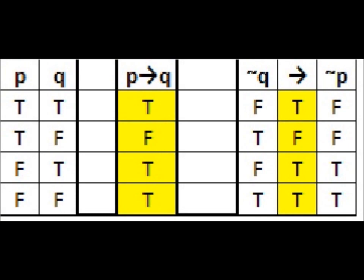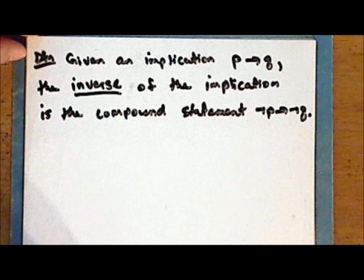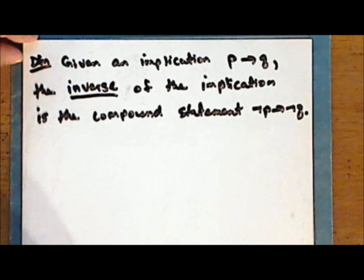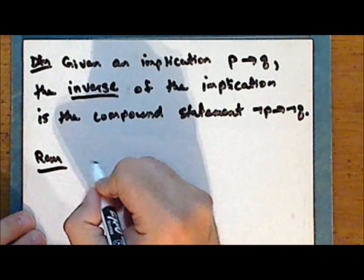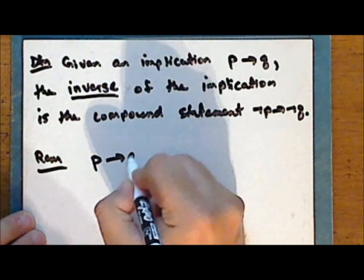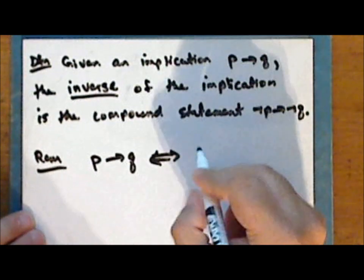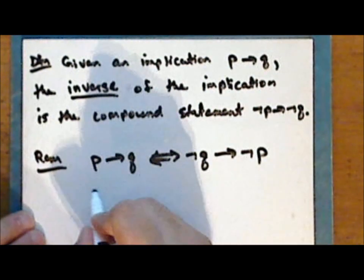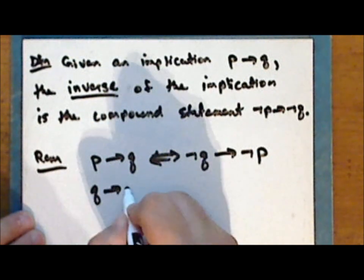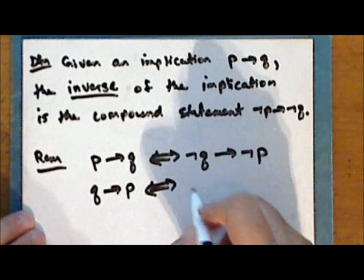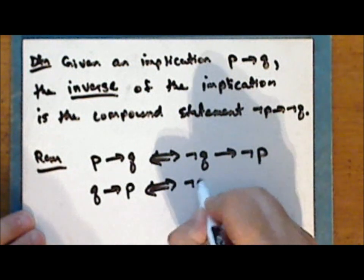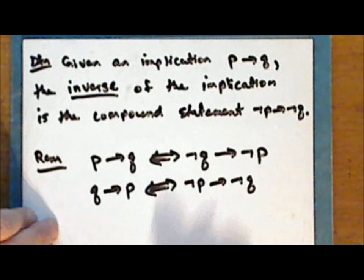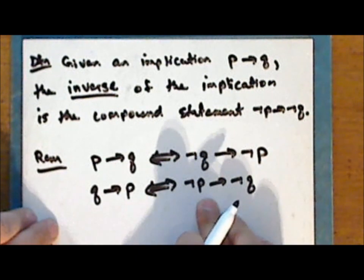From this truth table, we can see that the implication P implies Q is logically equivalent to its contrapositive, not Q implies not P. So we can group these four statements into pairs that are logically equivalent. The implication P implies Q is logically equivalent to its contrapositive not Q implies not P, and the converse Q implies P is logically equivalent to the inverse not P implies not Q. Notice that the inverse is the contrapositive of the converse.